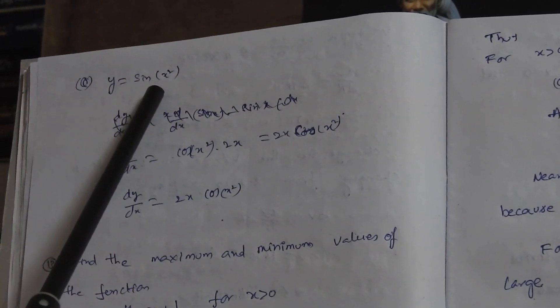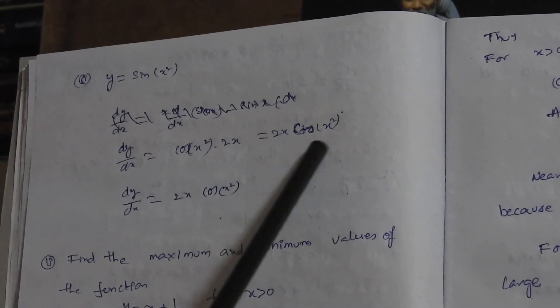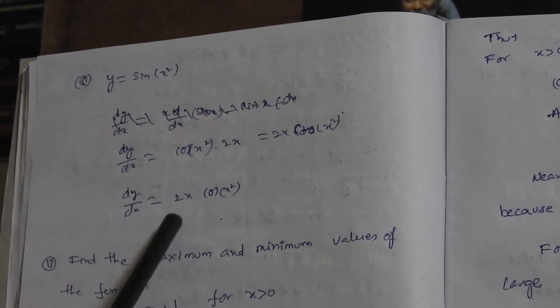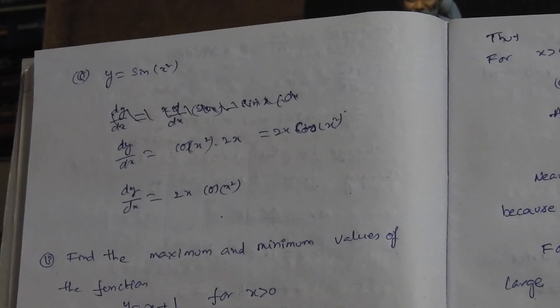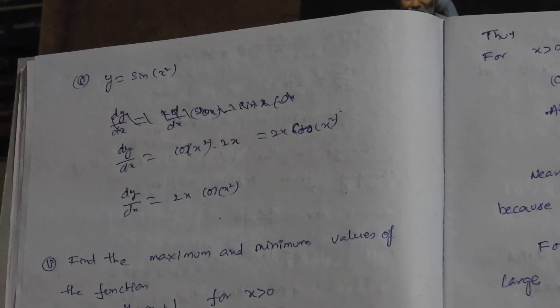Using the v by u method: dy by dx is equal to v into dv, where v is x and dv means sin x differentiation is cos x, minus sin x as it is, and dv means x differentiation which is 1. Whole divided by v squared, so x cos x minus sin x by x squared.